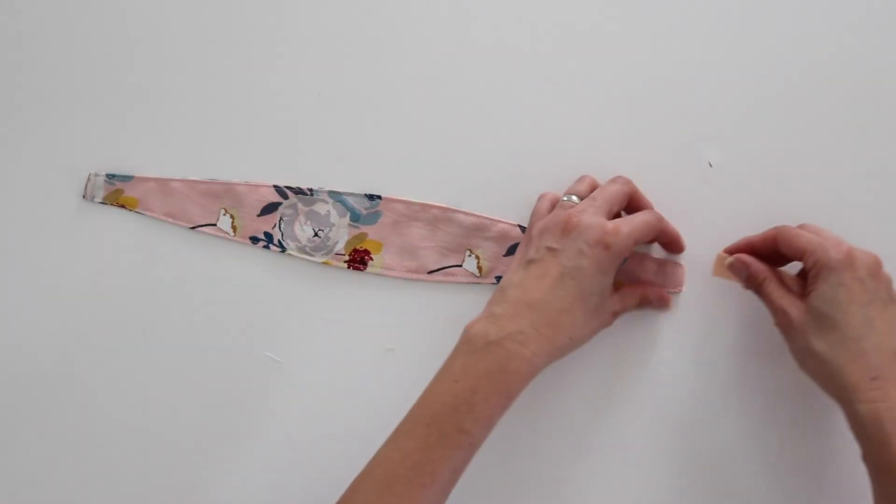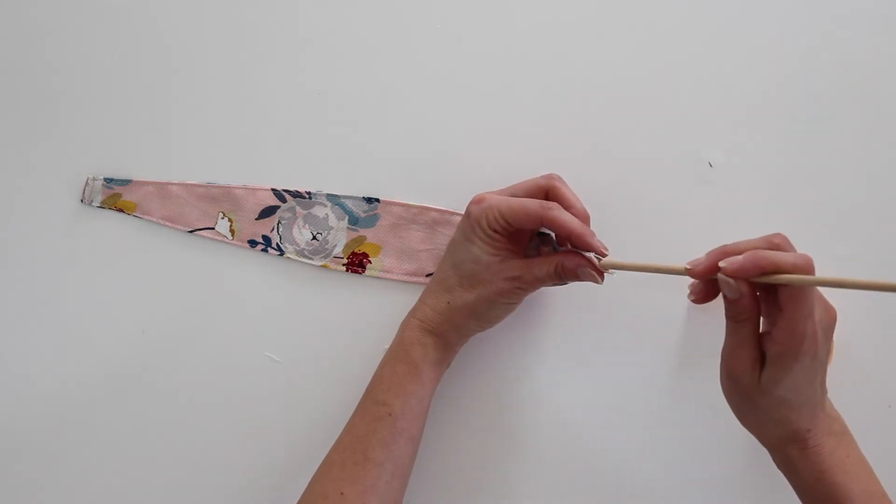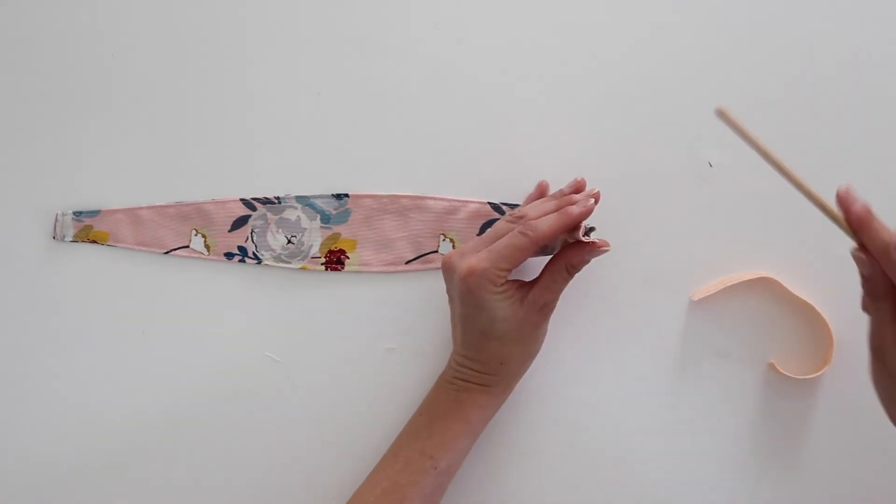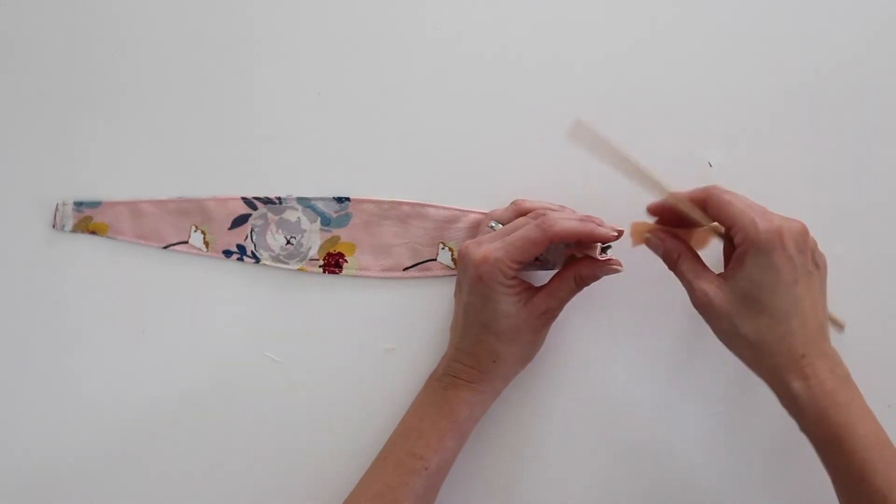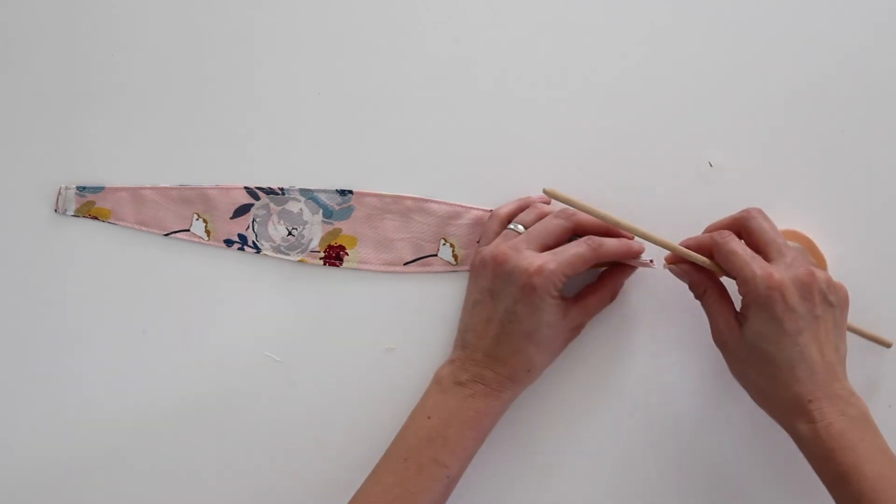The same thing is going to happen with the fold over elastic that I am using here. I'm going to open up that end where I've got the raw edges already folded in from before. And I will shove my elastic in.